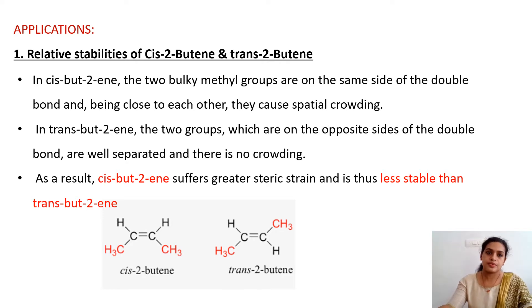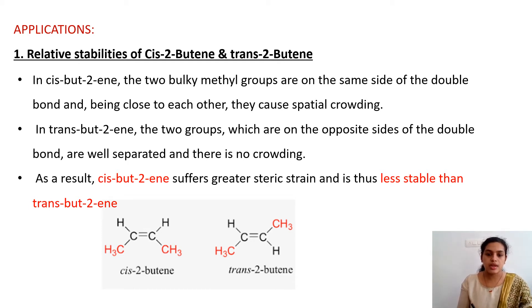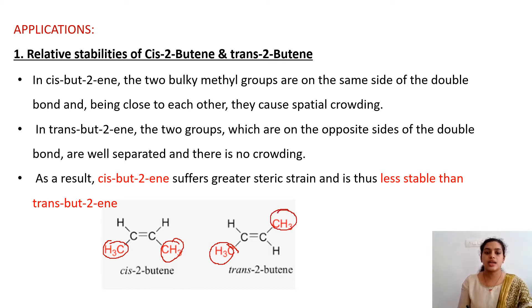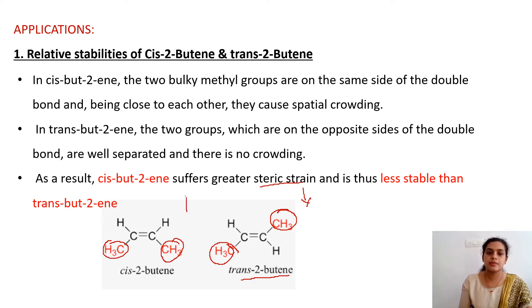The first application is to understand the stability of cis-2-butene and trans-2-butene. We know that 'cis' means both groups are on the same side of the double bond. In cis-2-butene, the bulkier methyl groups are nearer to each other, whereas in trans-2-butene, the bulkier groups are opposite to each other so there is not much interaction between them. This means that in trans-2-butene, steric hindrance is less and steric strain is less, whereas in cis-2-butene, the steric strain is greater.